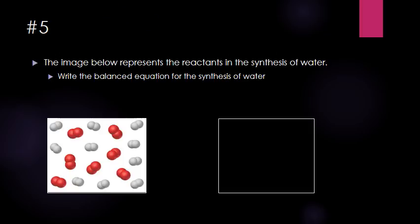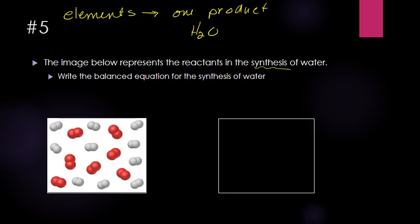Problem number five represents reactants in the synthesis of water. A synthesis reaction means you take elements to make one product — in this case water. To synthesize water from its elements, there are two hints in the problem: a set of double balls representing hydrogen (H2, one of the diatomic big seven) and a set of larger double balls representing oxygen (O2). Now we need to balance this equation.